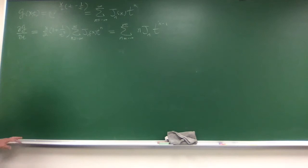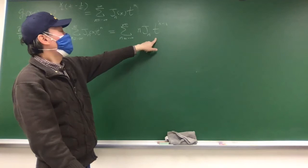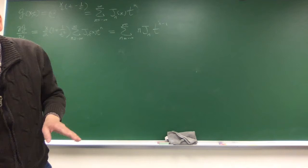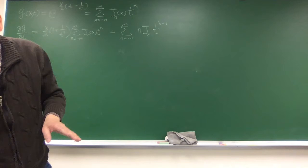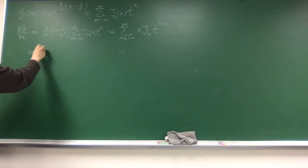Now we want to write everything in the same power series — the same summation — so that each term has the same power of t, and then we can set the coefficients to be equal. The right-hand side has t to the n minus one, but the left-hand side does not, so we simplify the left-hand side first.